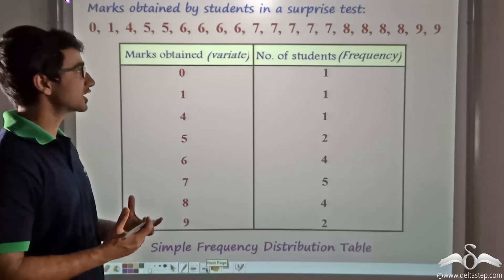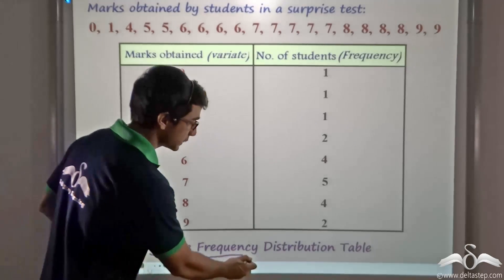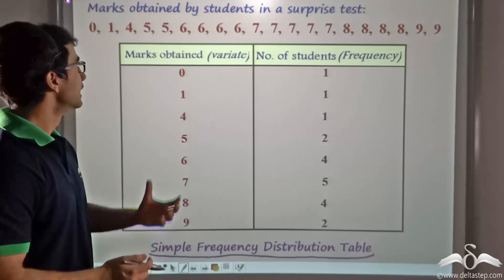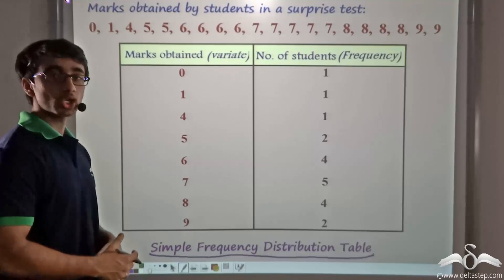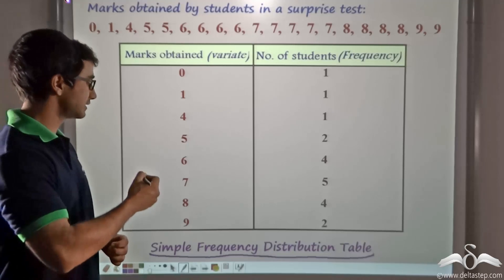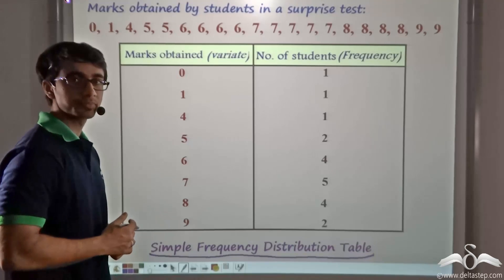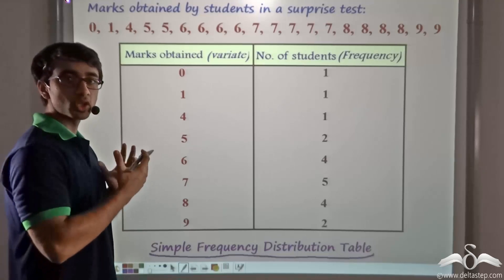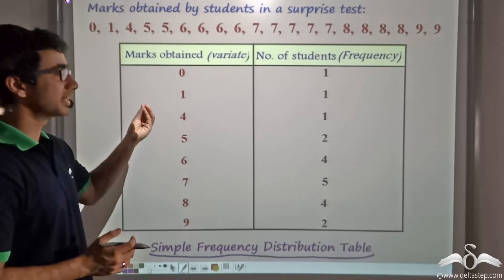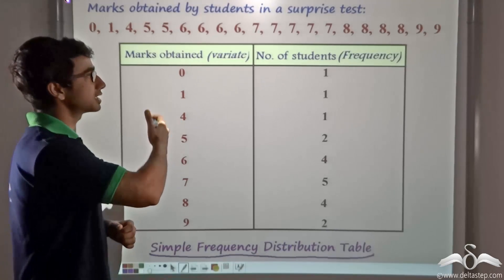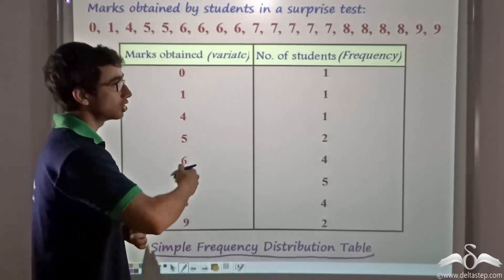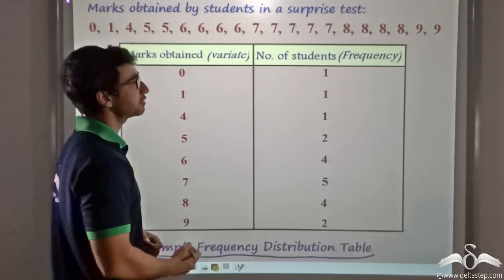Using this information, we can construct a table known as the simple frequency distribution table. In the first column, we place the variate, that is the marks obtained by the students. So I have placed 0, 1, 4, 5, 6, 7, 8 and 9 in the first column — these are the marks that have been obtained by the individual students. Marks 2 and 3 have not been obtained by anyone, so they are not present. Corresponding to the marks obtained, we place the number of students who obtained that particular mark in the second column — that is, the frequency.